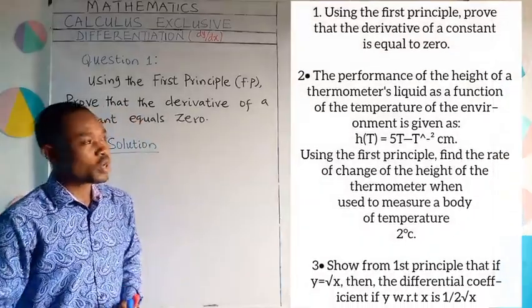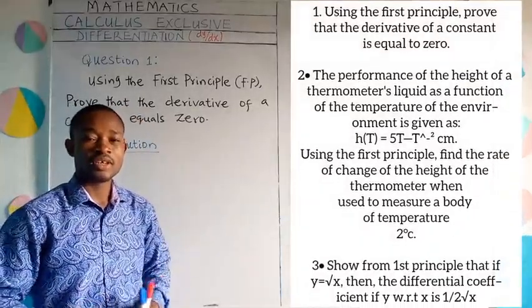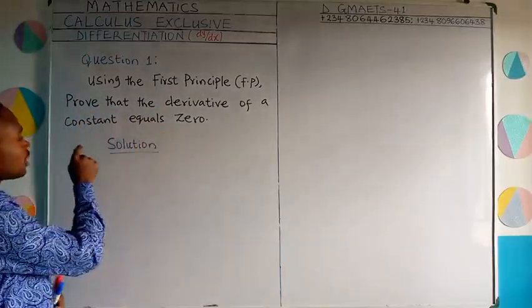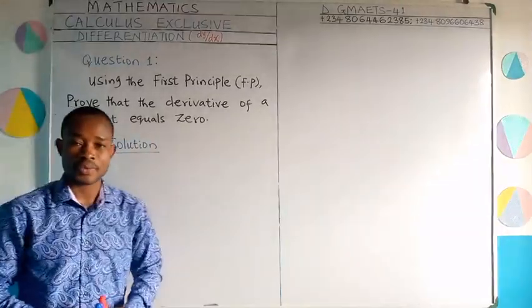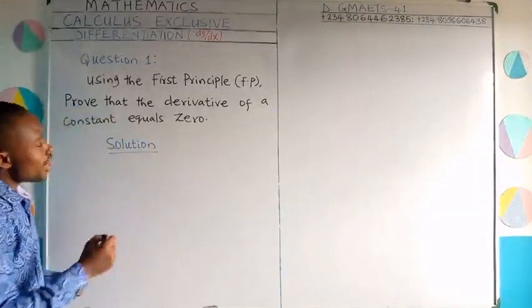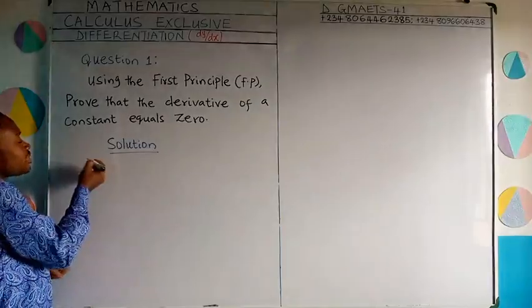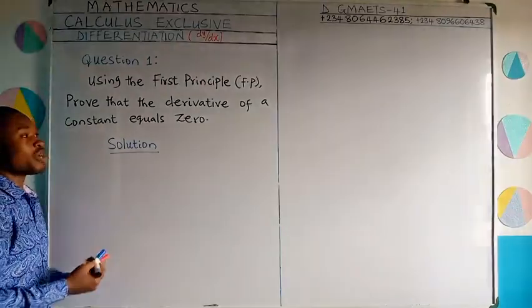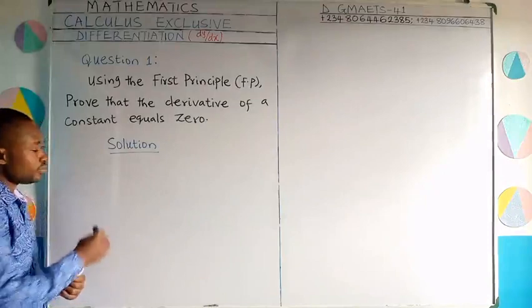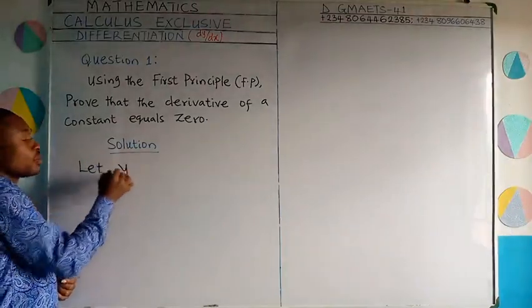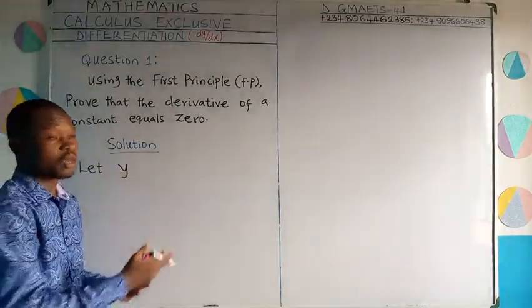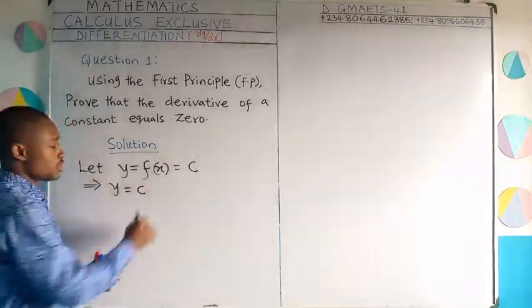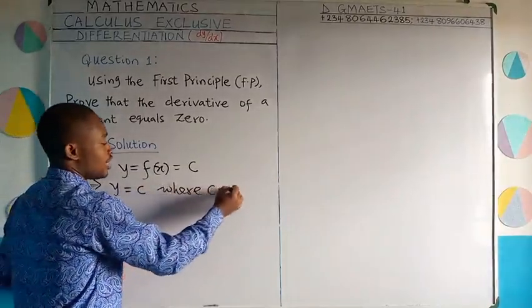The very first question we're going to solve is based on proving that the derivative of a constant is equal to zero. Using the first principle, prove that the derivative of a constant equals zero. Let us say that the function y is equal to a constant c, so we write: let y equal f(x) which is equal to c. This simply means y equals c, and take note, c is a constant.